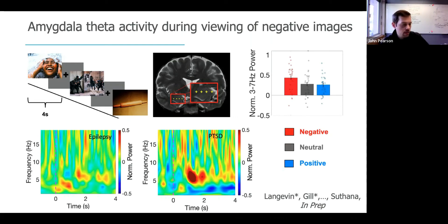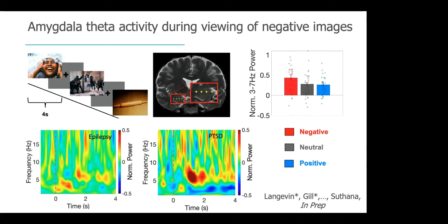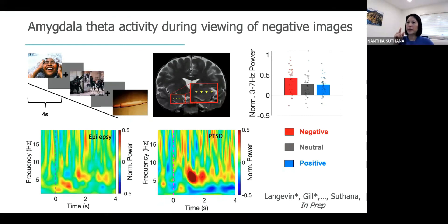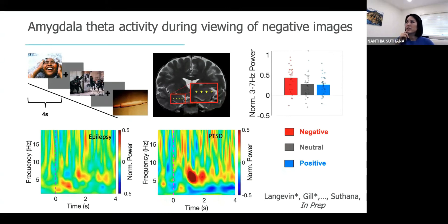Q: Is gamma power modulated in the same way — based on whether or not it's a target search — the same effects as theta? A: I believe so; it's in the supplement of that paper. The effects in gamma were overall much more variable, which could be a power issue since the gamma signal is just a lot harder to detect. But we do see boundary effects in gamma. I believe we see the cognitive task variable effect. I'm not sure we looked at saccades. Overall, it's just a lot harder to see consistency in the gamma results.